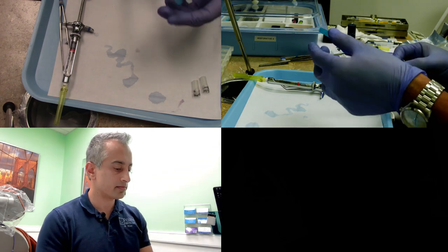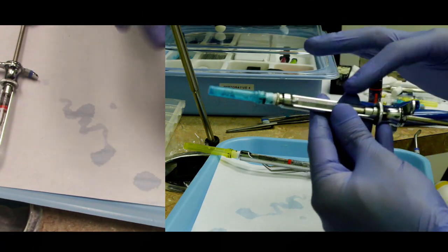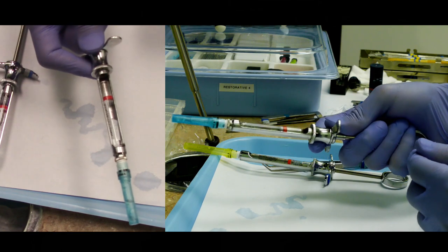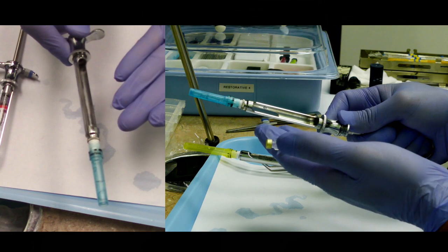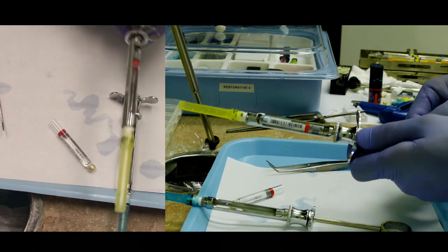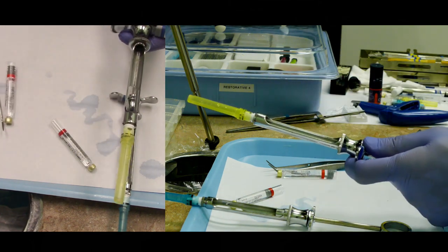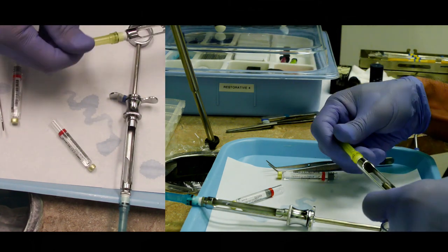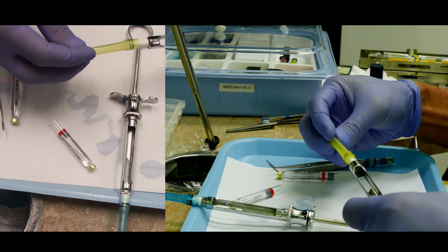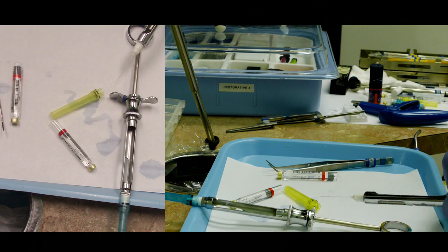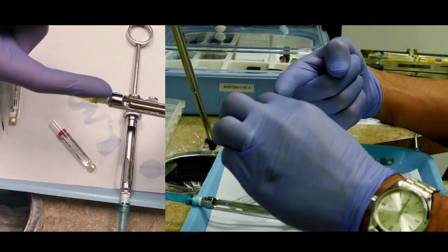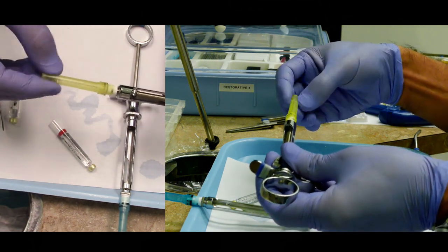When we disassemble this syringe, remember how we talked about that harpoon engaging? We have to twist that harpoon out of the plunger, pull all the way back, and pop that cartridge out. Now we have to unscrew our syringe top. Be careful—if you are unscrewing and you accidentally uncap it, drop the cap and use your scoop and cap technique to cap it again. As you're unscrewing, put pressure inwards to make sure that cap comes off with the needle.